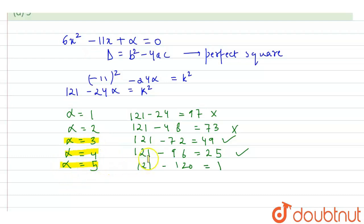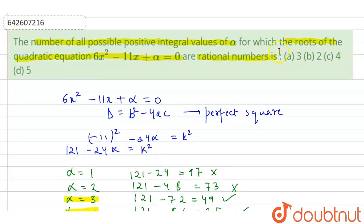If we take alpha equals 6, it will exceed 121. So we will get a negative value. Negative value can never be a perfect square. So we have only 3 values. So option A, which is 3, is the correct answer.